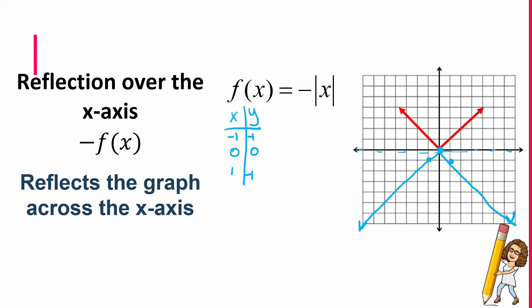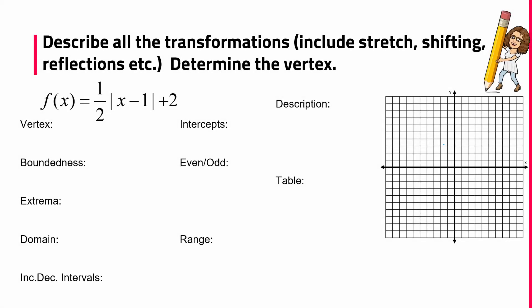We can also have a reflection over the y-axis. However, we're not going to cover that just yet, because reflection over the y-axis on an absolute value graph is quite absolutely boring — it's literally the same graph. So let's try a couple of examples. We want to describe all the transformations and determine the vertex.